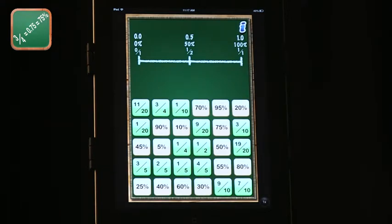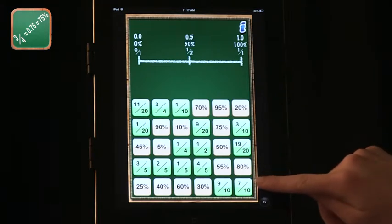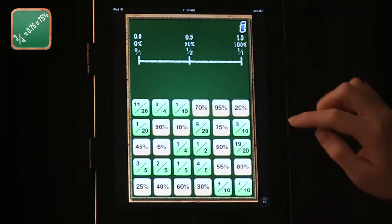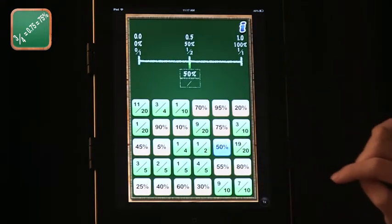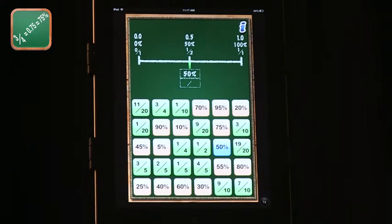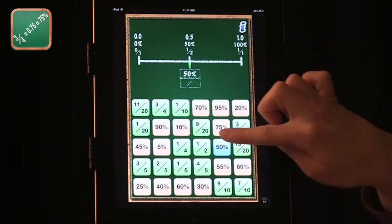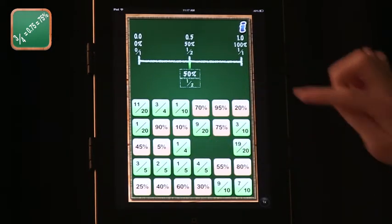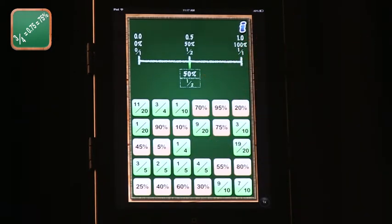The way that this works is students will select. I have it on a setting now where I'm matching up fractions to percentage values. So I have fifty percent, which is a red square. And since I selected a red square, I know I have to select a green square next. And I know fifty percent is equivalent to one half, which shows matched up on the screen at the top.